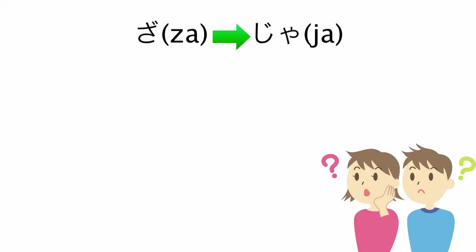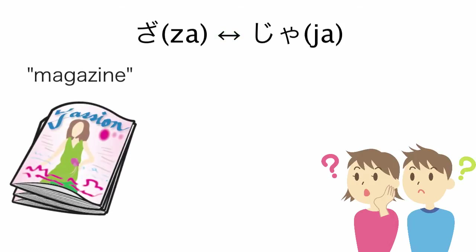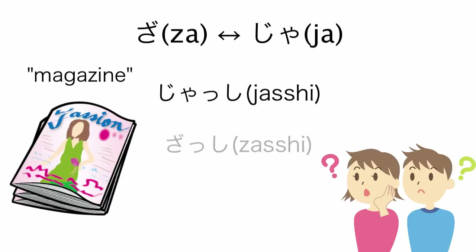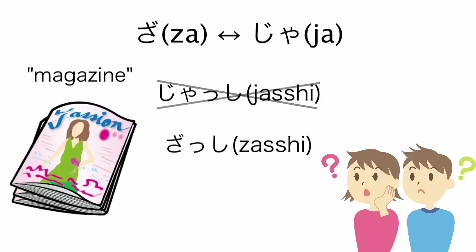In Japanese, both sounds are present and they are treated as different sounds. So when someone uses the wrong sound to mean the other, they are using the wrong pronunciation. Do you hear the difference between the two?